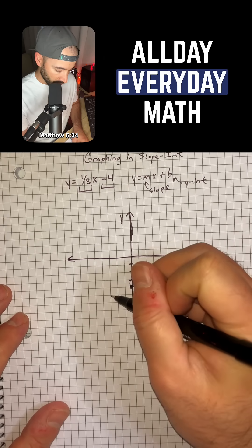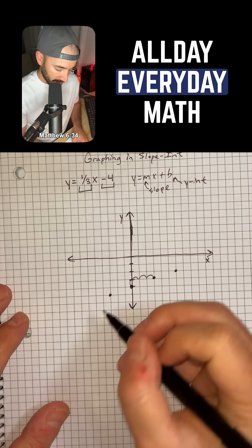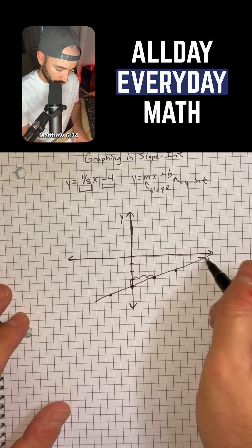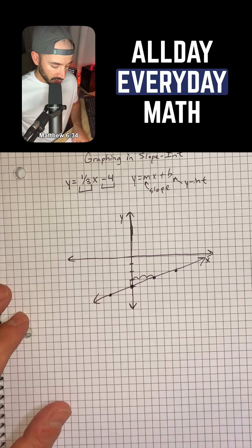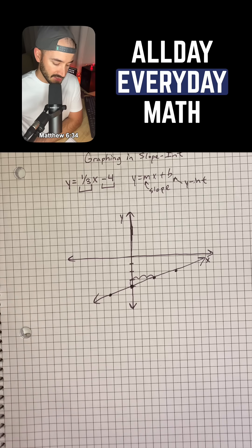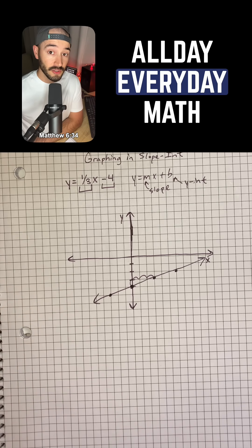And we can go the other way as well, and then we can just draw our line through those points, make our arrows, and that is how you graph in slope-intercept form, and that's all you have to do.